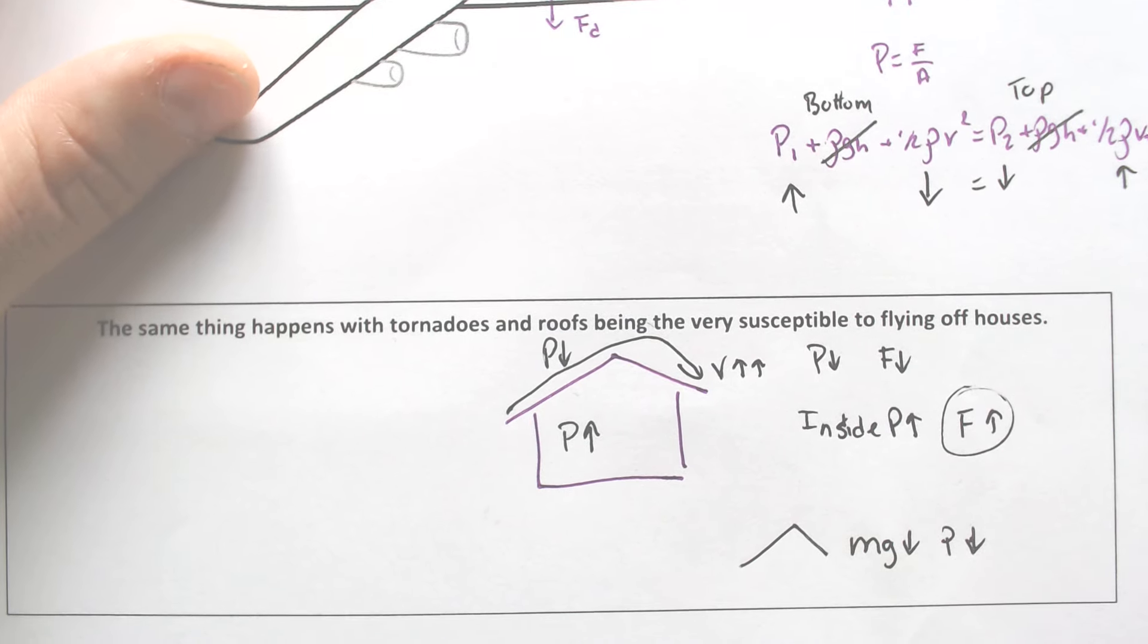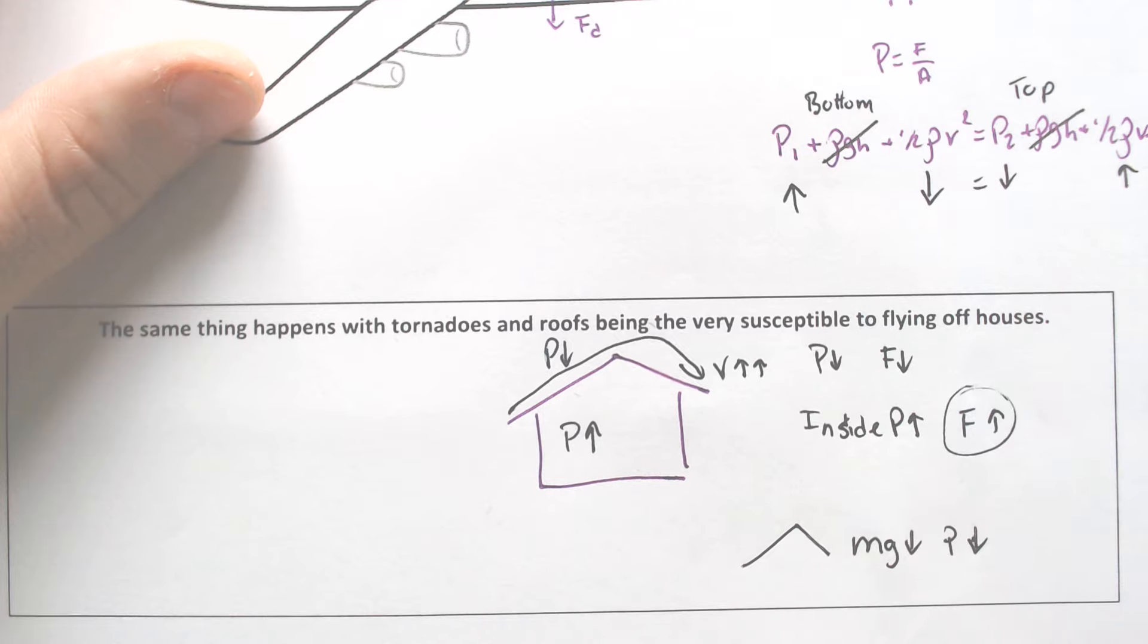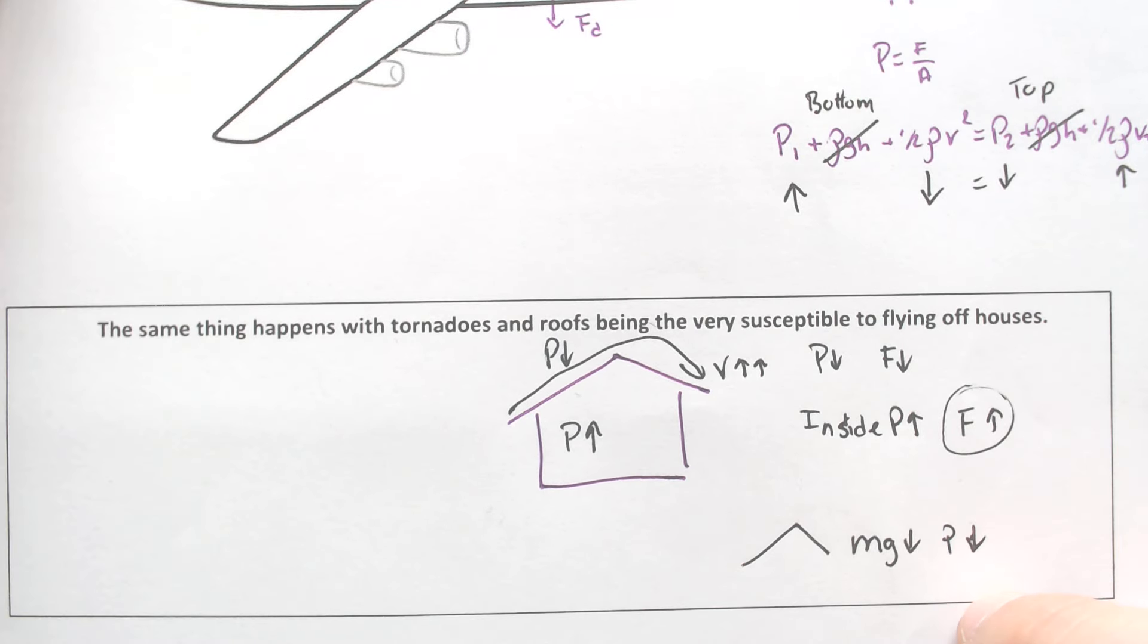But the force of Bernoulli's equation would be so much that the roof just flies straight off that building.